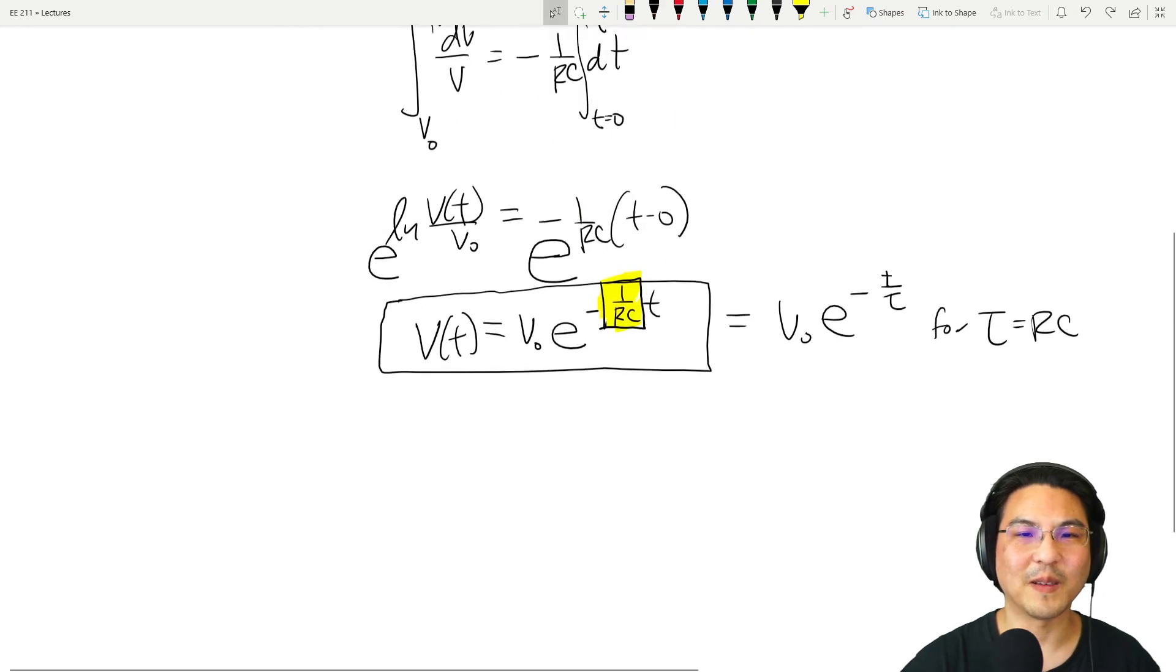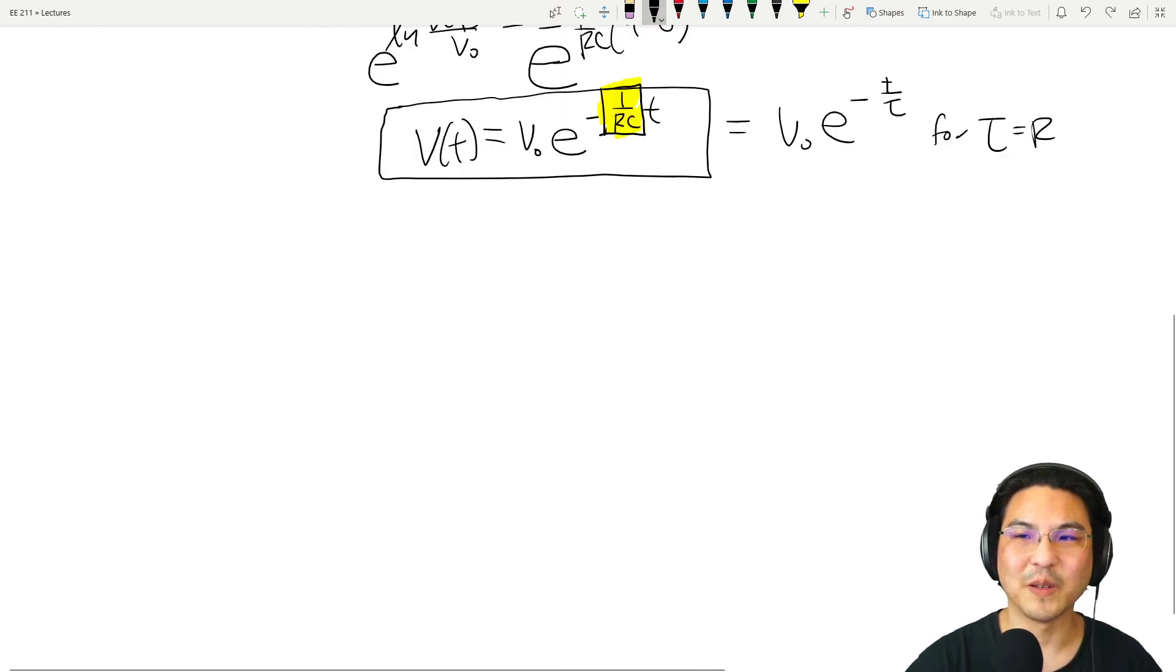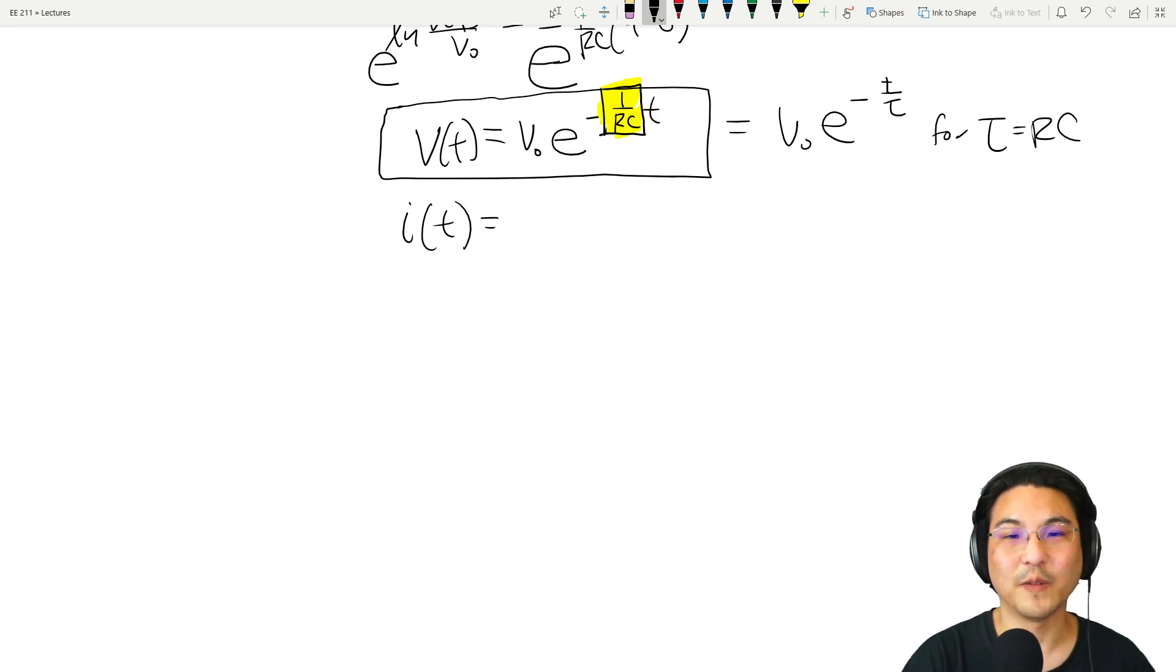And if you look at the resistor, the voltage, now we know the voltage. So what's the current? The current through the resistor is V over R. So just this over R.